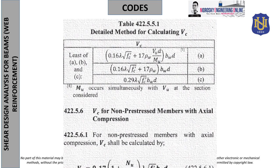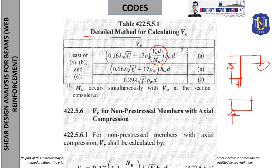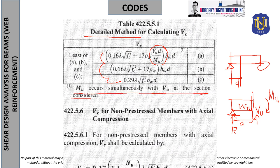For the detailed condition with moment, there is an added term Mu — the moment occurring simultaneously with Vu at the section considered. For a simply supported beam, cutting at distance d from the support gives internal V and M at that section, which are used in the detailed Vc formula. The lesser of the three listed values provides the selection for Vc under detailed solution.